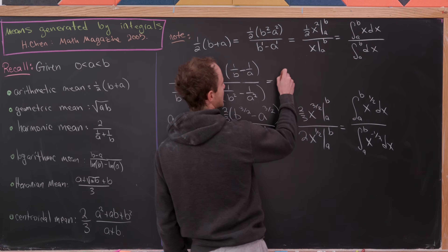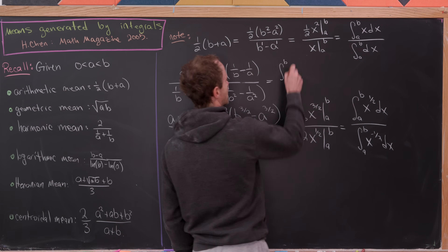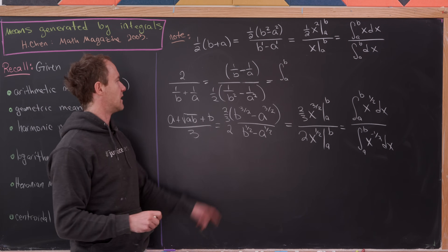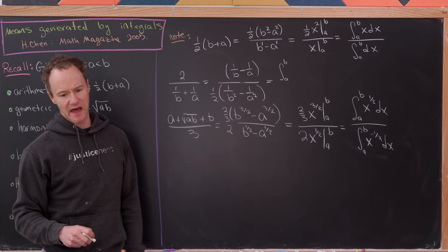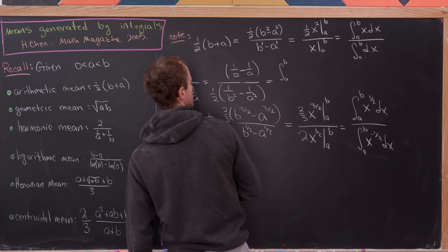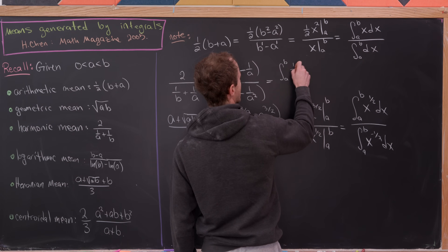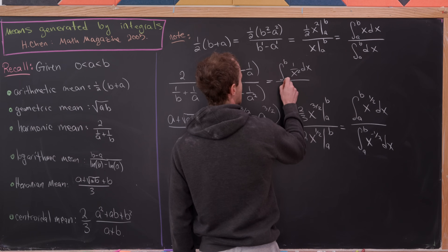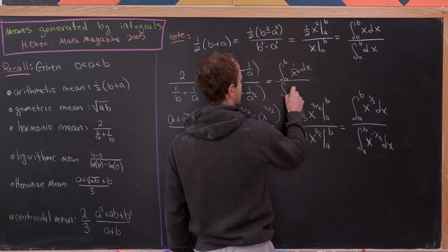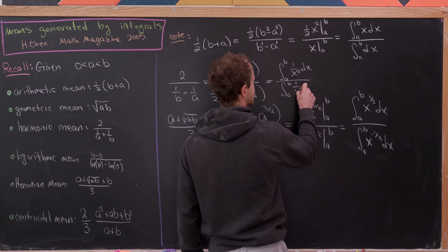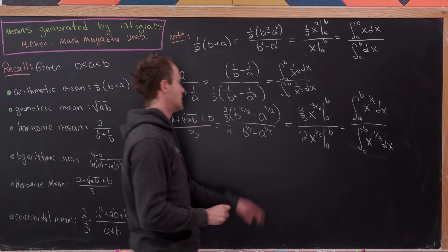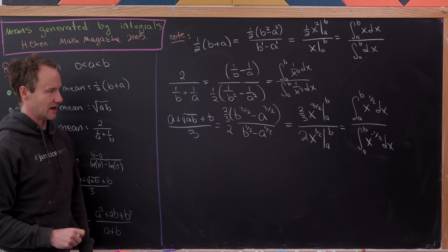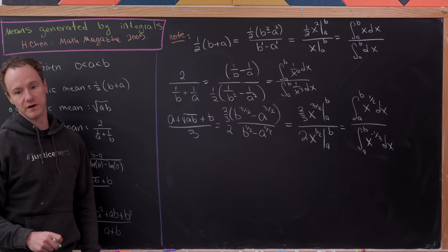The harmonic mean turns out to be the integral from a to b of (1/x²) dx over the integral from a to b of (1/x³) dx, with a couple of minus signs canceling in both cases.